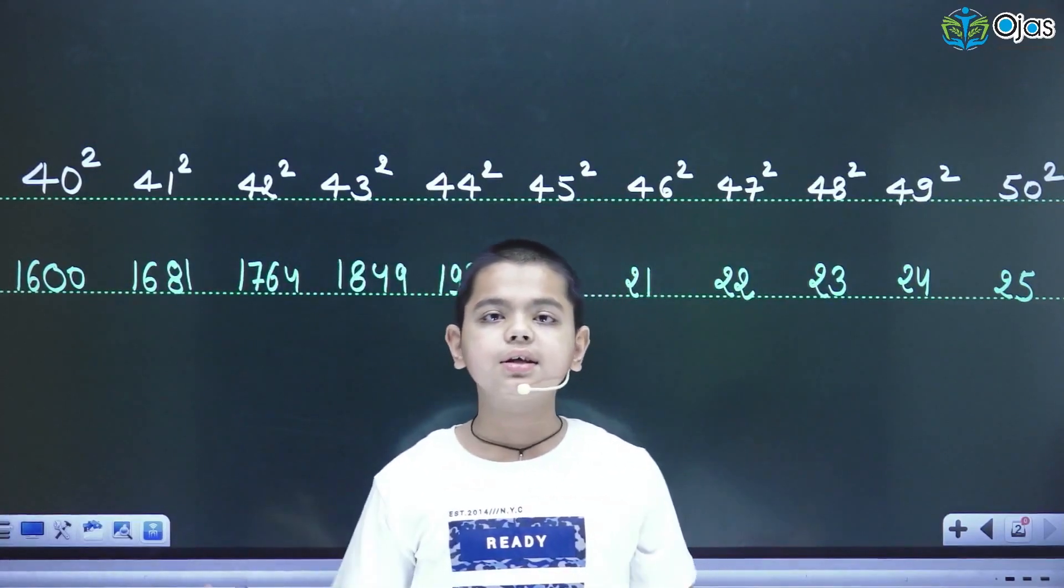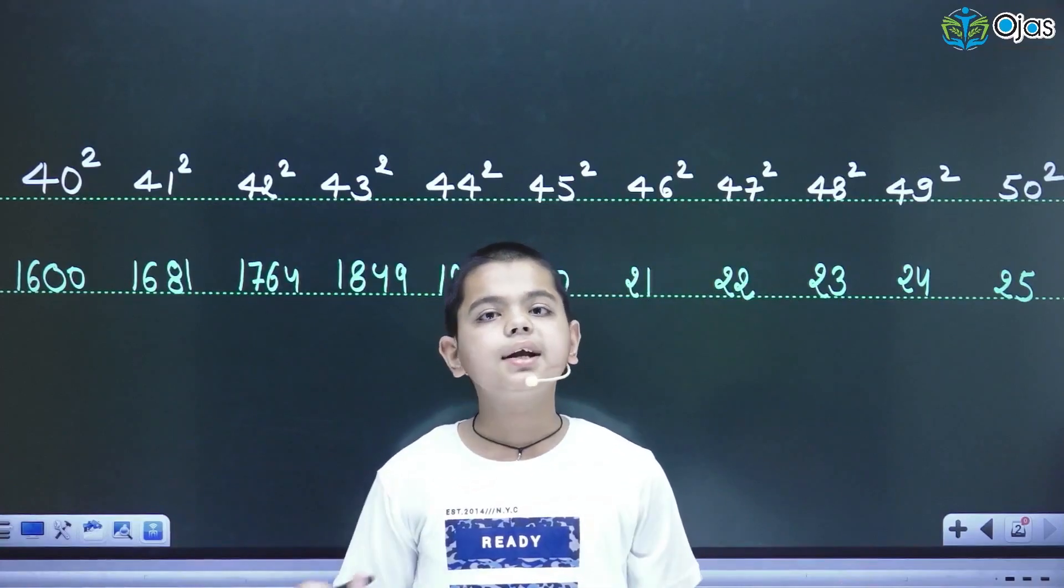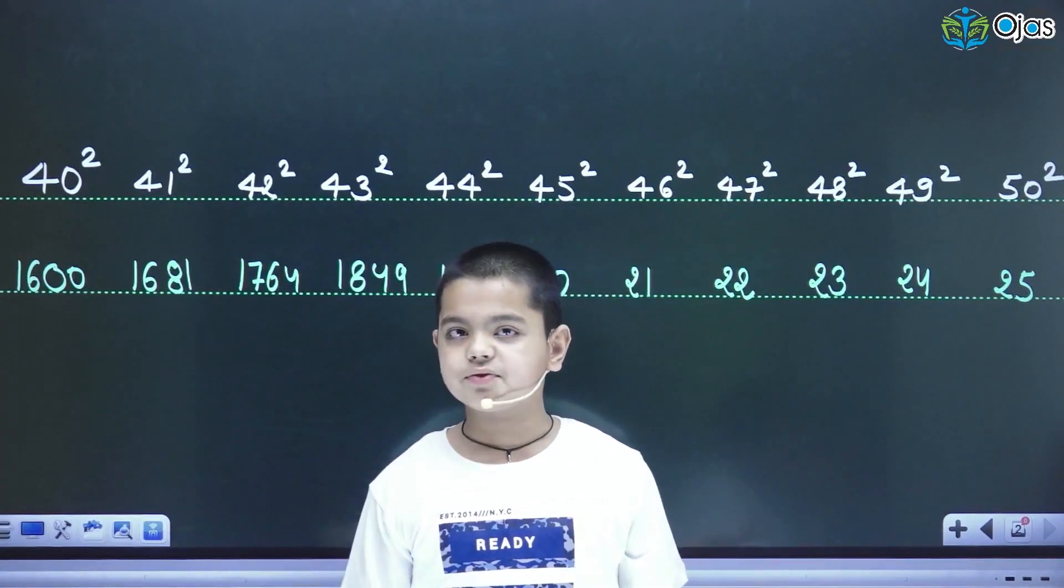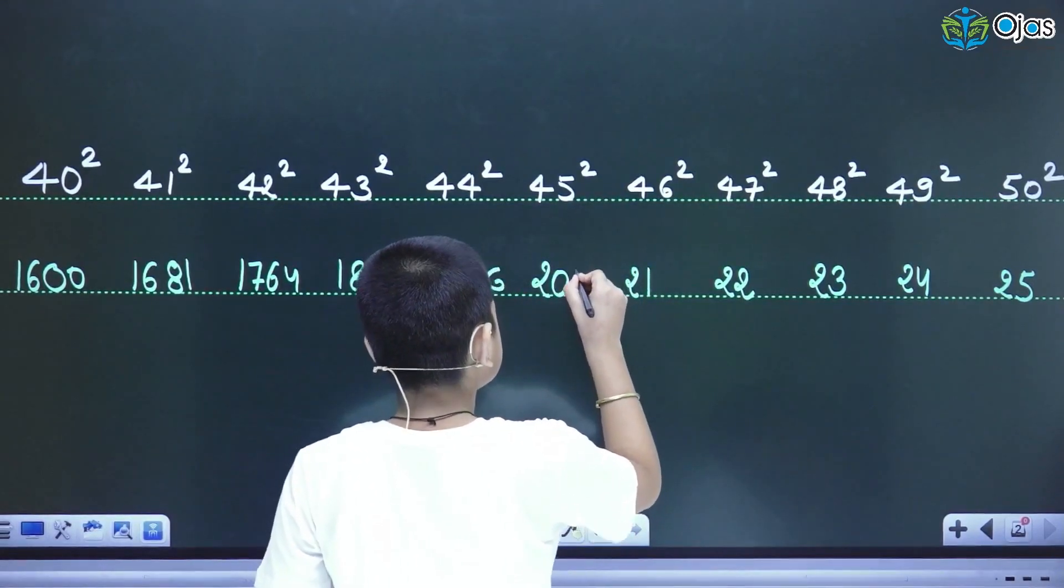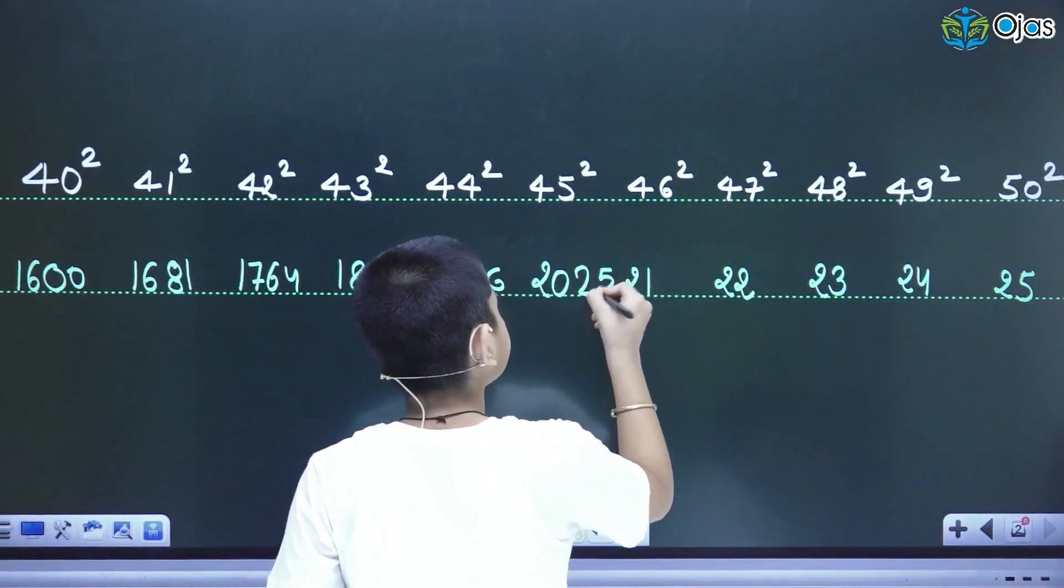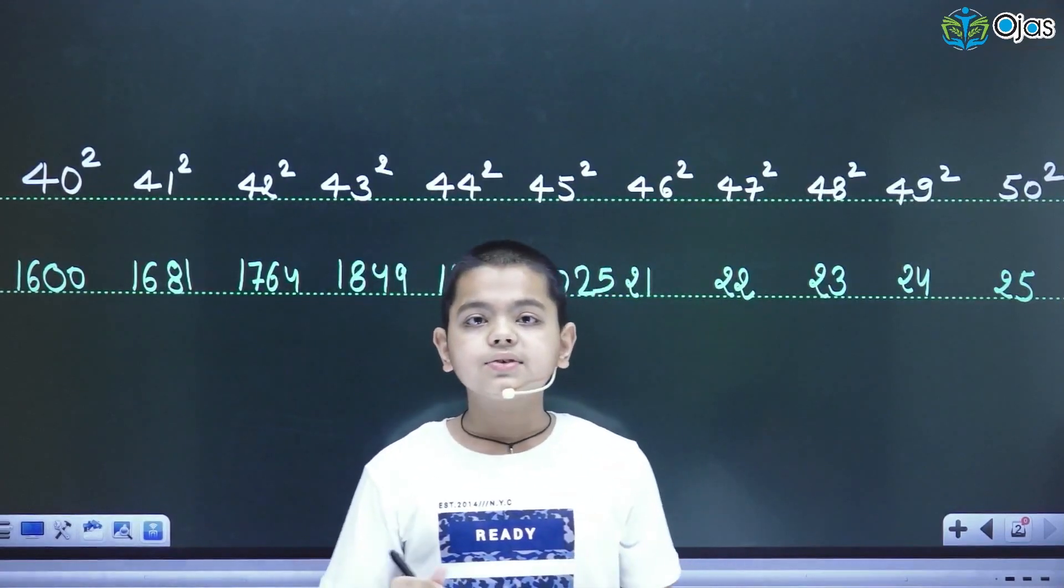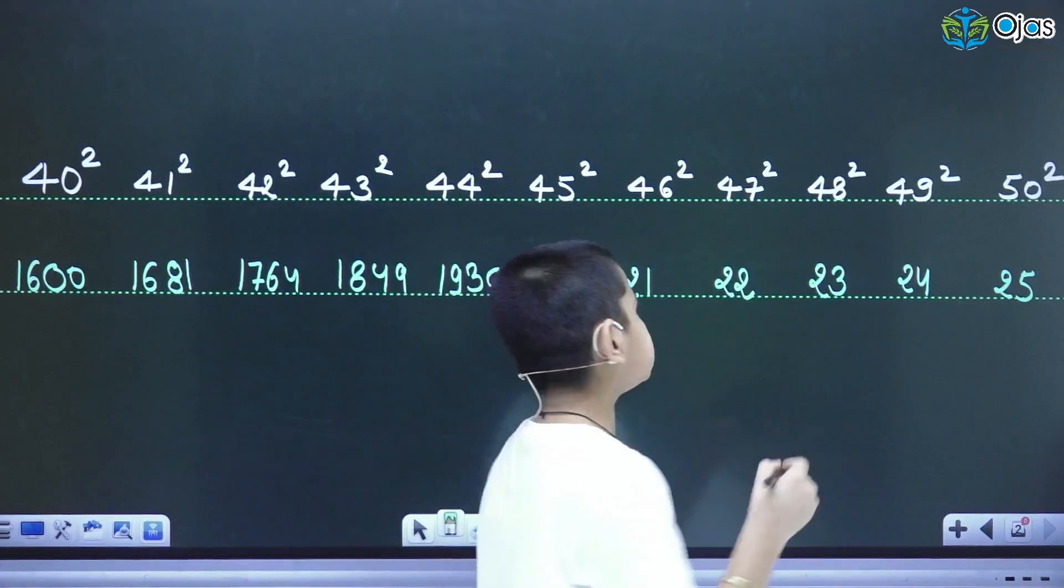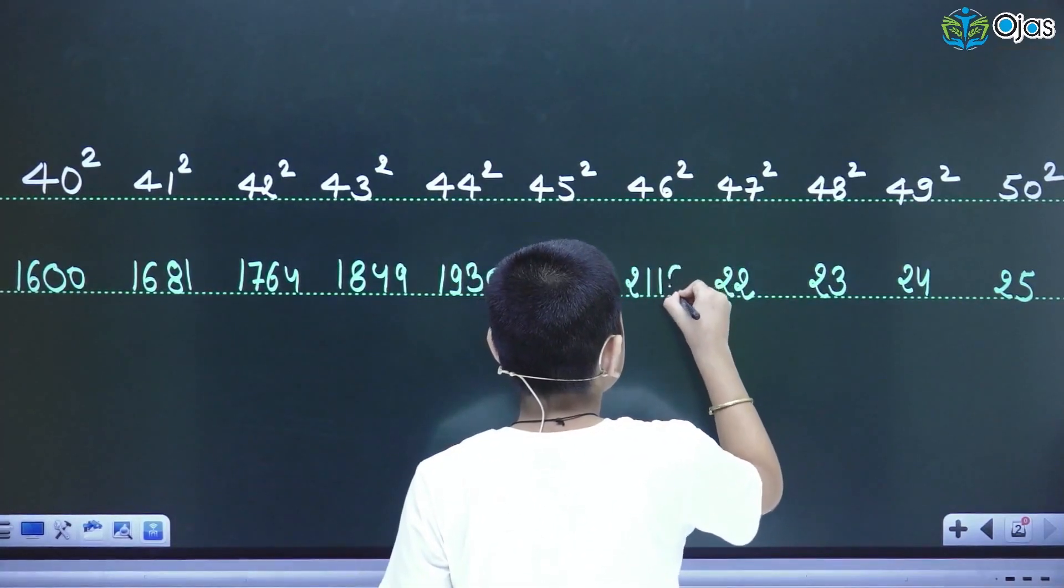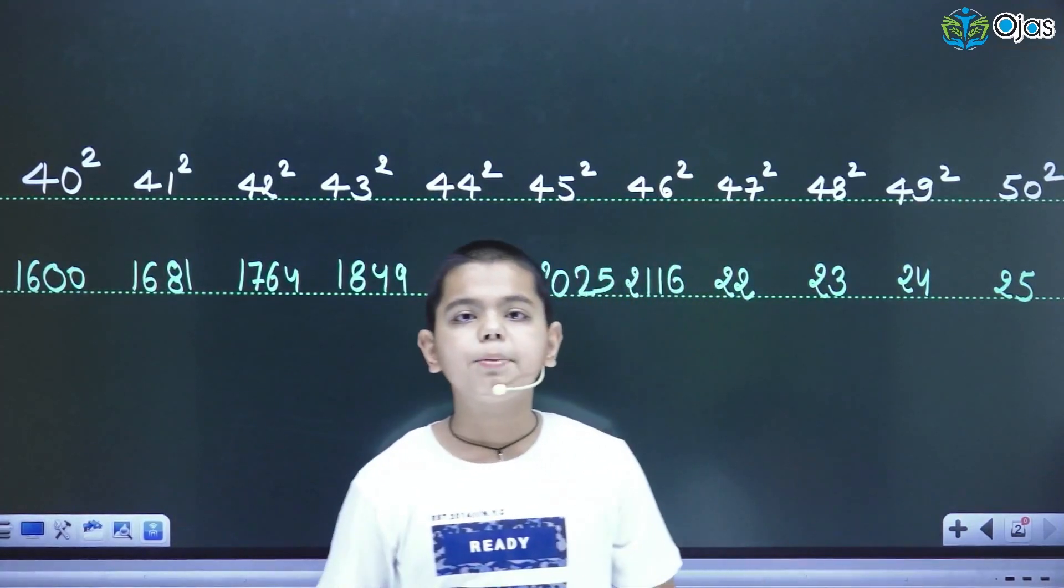Now you are thinking there is no complement of 5, but it is wrong. The complement of 5 is 5 only and the square of 5 is 25. The complement of 6 is 4, so the square of 4 is 16. I will write here 16.